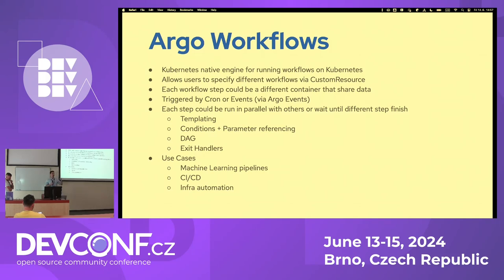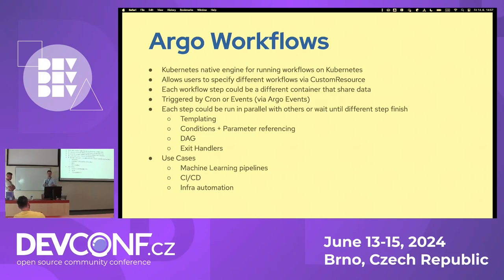You can easily pass results from one container to another. Argo Workflows can be triggered two ways: via cron expression, or mainly via events. The workflows also support templating, conditions for specific parts, and exit handlers — which are great when a workflow fails and you want a Slack notification or a Jira ticket created. Use cases include CI/CD, infrastructure automation, and machine learning.